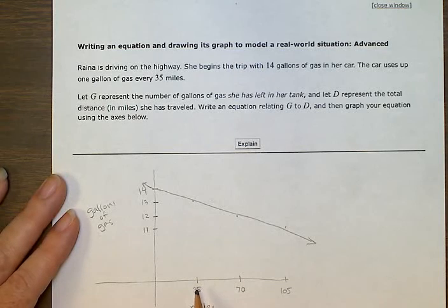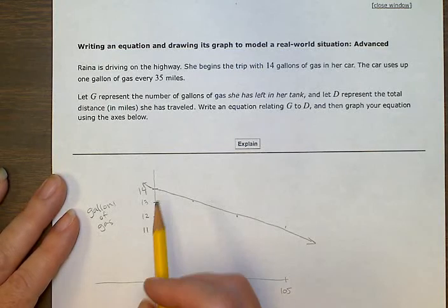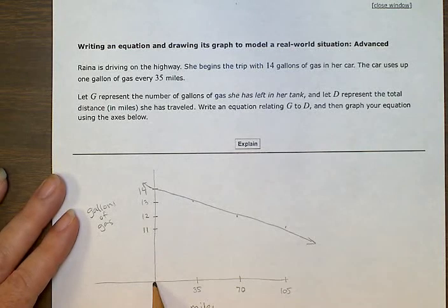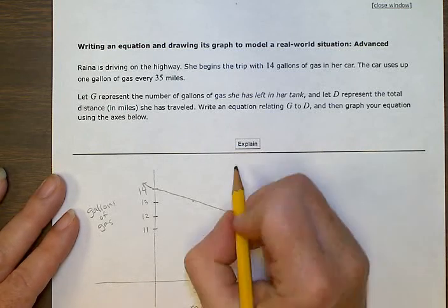So, the y-intercept, once she's driven zero miles, was how many gallons of gas? That was 14.